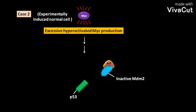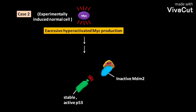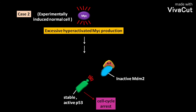The second is the conversion of inactive p53 protein to stable active p53 protein. Depending on the cell type and extracellular conditions, stable active p53 protein then causes either cell cycle arrest or apoptosis.